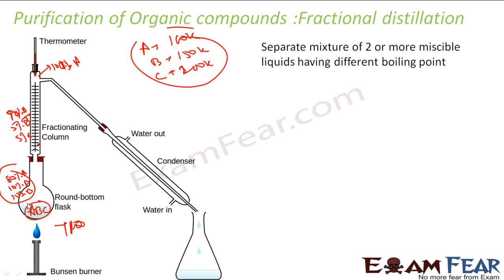Since I am heating at around 110, A will not cool down but B and C will. So any B and C that went up will cool down and fall back. With the fractionating column you get 100% pure A and collect it. Then you increase the temperature to 160 Kelvin — A is gone, and you collect pure B. Then again heat to 200 Kelvin to collect pure C. That is how you purify or separate mixtures with different boiling points during fractional distillation.